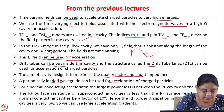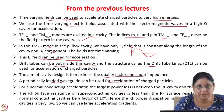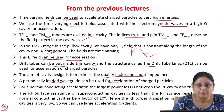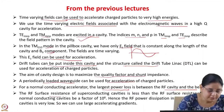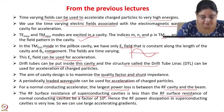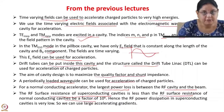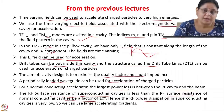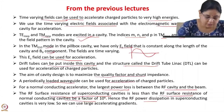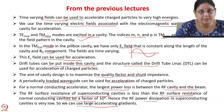For a normal conductor accelerator, the largest power loss is between the RF cavity and the beam. Typical efficiencies of normal conducting accelerators are in the range of 20 to 30 percent—out of whatever power is fed into the cavity, only 20 to 30 percent goes to the beam, and the remaining is dissipated in the cavity walls. The RF surface resistance of superconducting cavities is less than that of normal conducting cavities by a factor of 10 to the power of 6, so the RF power dissipation in superconducting cavities is very low. Superconducting cavities offer a huge advantage because the entire RF power can go for acceleration of the beam, and we can also use large accelerating gradients in superconducting cavities.